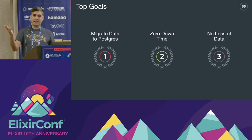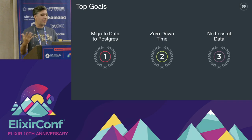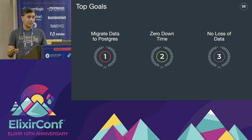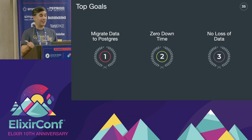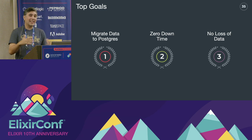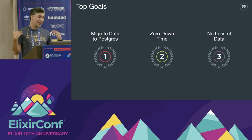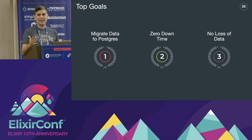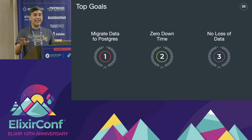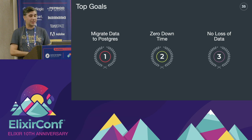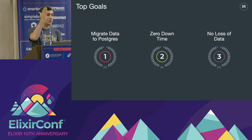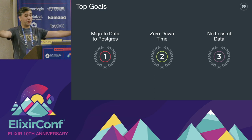These were my priorities for doing the migration: get out of Firestore and over to Postgres, no downtime — I want zero downtime even though it's my own application — and no data loss during that transition period. So when switching from serverless to Phoenix, I don't want to lose any data in the process.